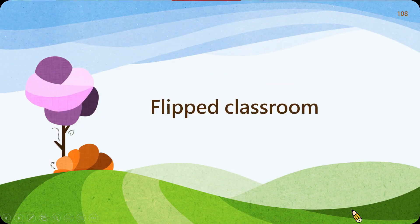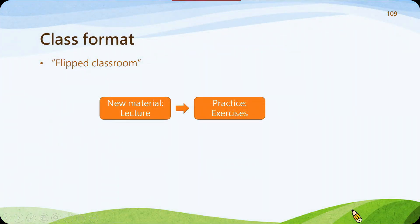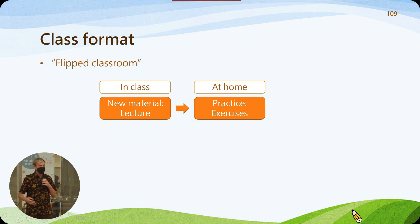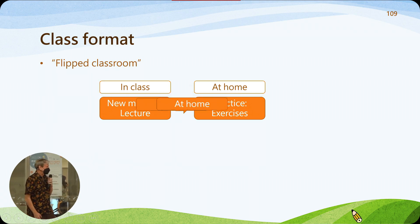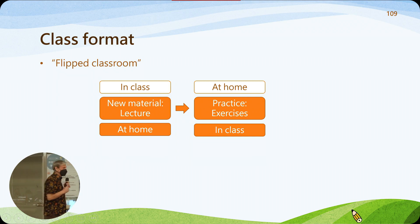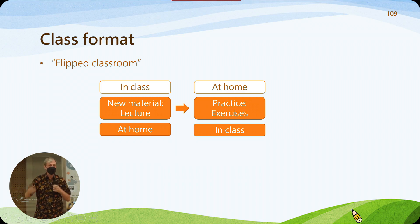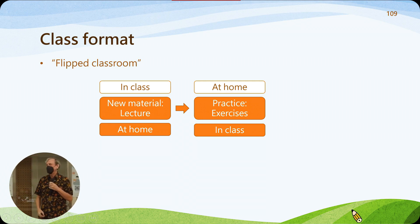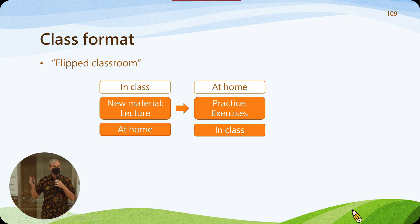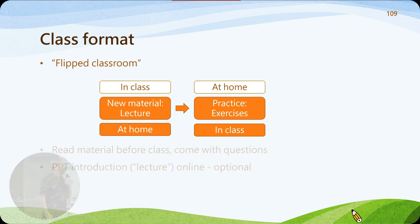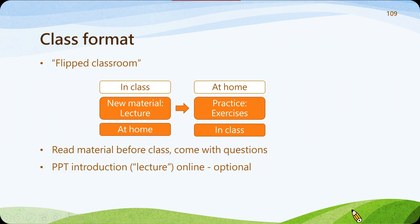In a typical classroom, new material is presented in class and then students go home and work. The flipped classroom reverses that. The benefit — particularly for a writing class but for any class — is that if they start going the wrong way and you're in class, you can redirect them. Rather than going home thinking they've got it and reaching a point where everything has to be redone, catching problems early by having them work in class is much more effective. That means they need to read before class and come prepared.